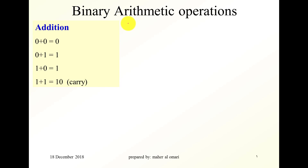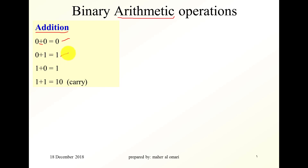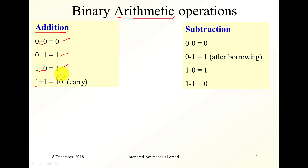Binary arithmetic operations are arithmetic operations done over binary numbers. The first operation is addition, with the following rules: zero plus zero equals zero, zero plus one equals one, one plus zero equals one, and one plus one equals zero with a carry of one. These are the binary addition rules.